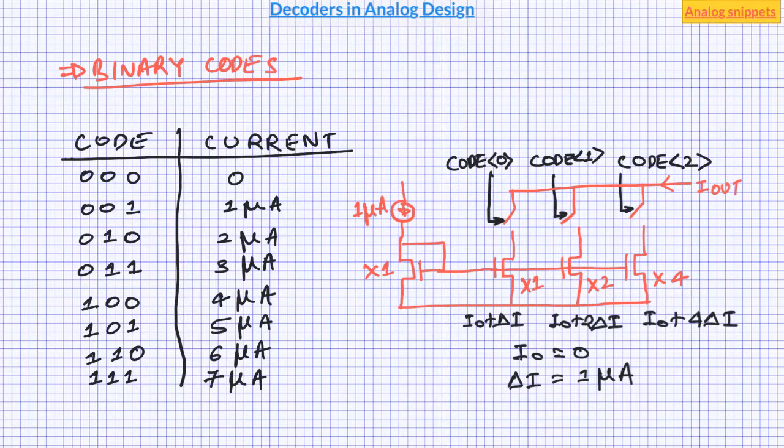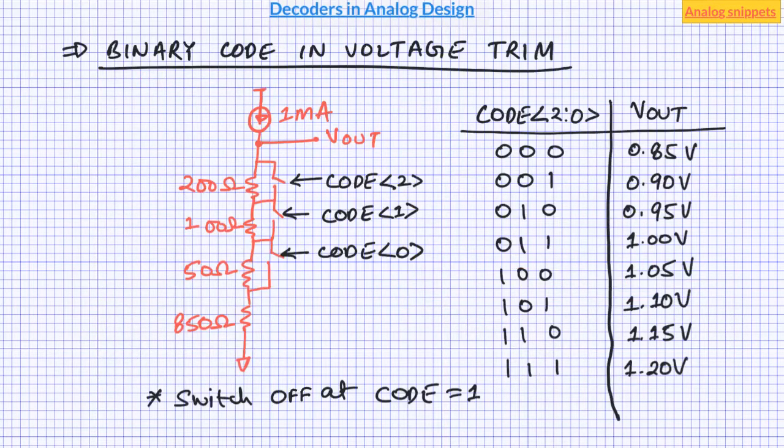Now this binary coding can be applied at many places. For example in voltage trimming. So in this scheme I am trimming the voltage around 1 volt in step of 50 millivolts. So binary coding is really nice and easy and requires very little digital hardware. But as the number of code increase the binary coding runs into a problem where the increment can be non-monotonic.